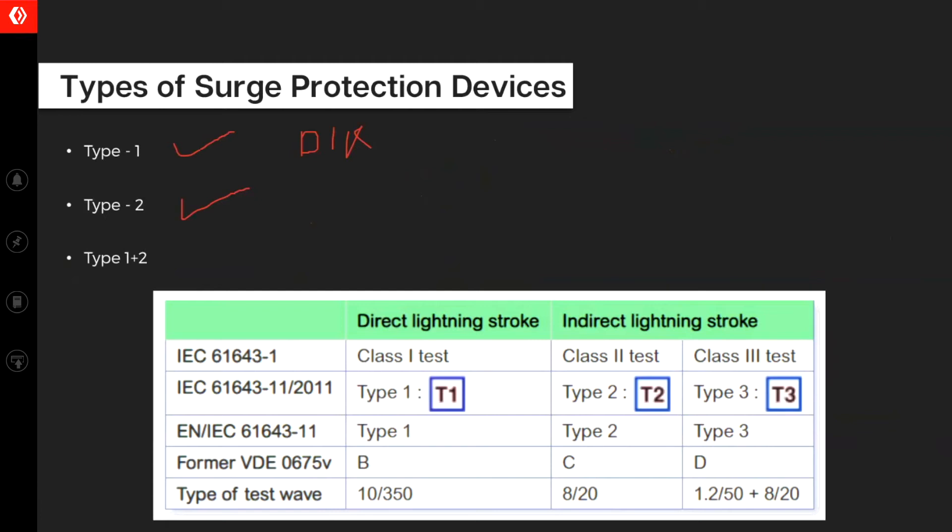Type 2 is for indirect surges. Indirect surges as in, your generator malfunctions or there is a sudden loss of load on your system, which will cause the voltage to rise and so on. If I was to explain you in terms of graph, this is the voltage and this is the time. A lightning strike will look something like this. Very high impulse voltage. It will be very high impulse voltage. Whereas a generator malfunction surge will look something like this. Because the voltage would increase, but it will be prolonged increase.